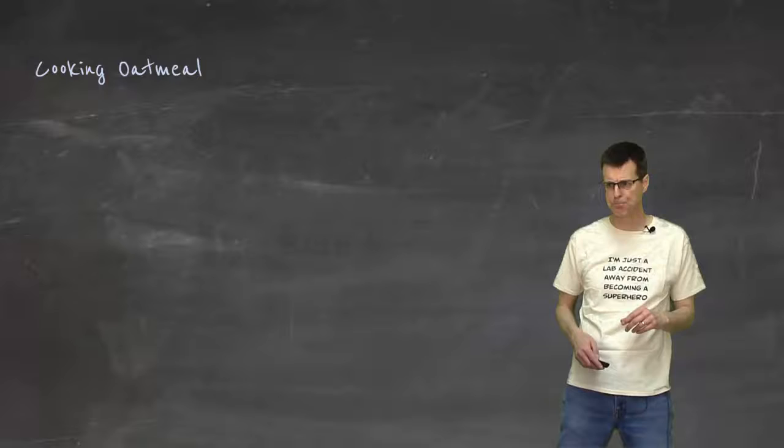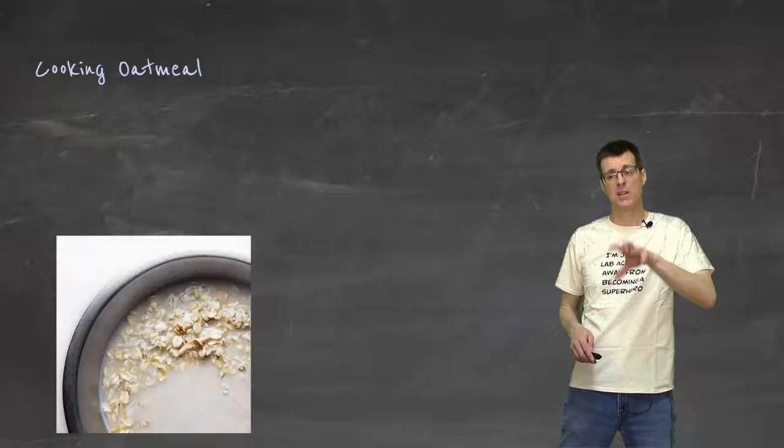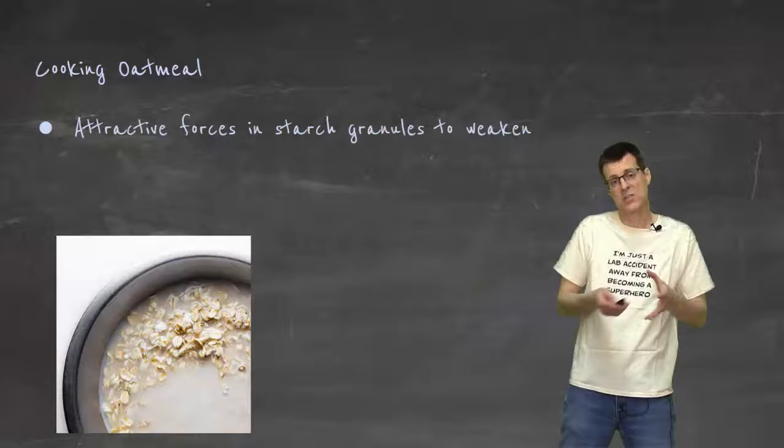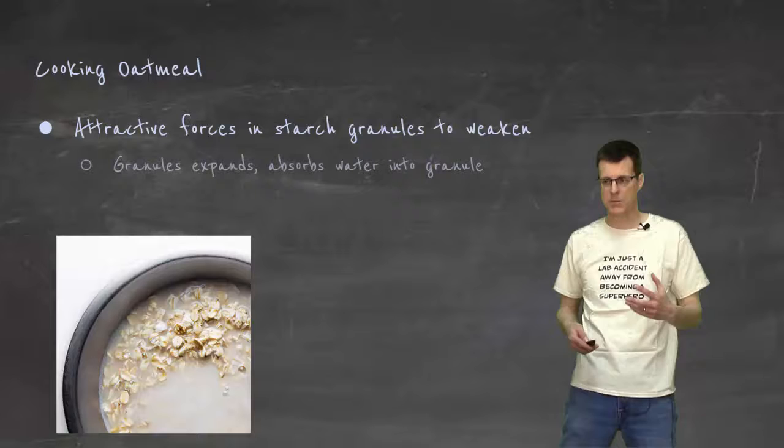Something similar is happening with oatmeal, except not with proteins. Oatmeal has a lot of starches in it, and when you first mix the water with the oatmeal, it looks like raw oatmeal. But as you cook it, what happens is the heat disrupts the attractive forces in the starch granules, causes those to open up, but now instead of forming new attractions as much, water is able to get inside of that granule.